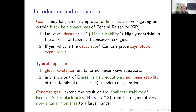Typical applications of such decay questions are global existence results for nonlinear wave equations, and in the context of Einstein's field equations, the nonlinear stability of spacetimes. The concrete goal of this talk is to extend a result I proved with András Vasy on the nonlinear stability of Kerr-de Sitter black holes in the regime of very small angular momenta to a larger range of angular momenta, including a physically relevant range of large angular momenta and small cosmological constants.